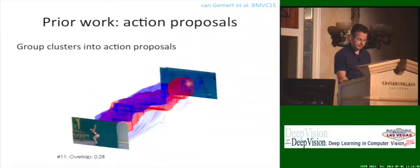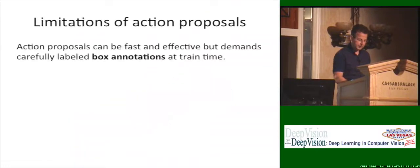Action proposals are great, and they can be super fast and effective. But they have one major limitation. At training time, you need to specify for each action also this bounding volume. So you have to label for individual frames, boxes. This is, of course, very expensive and doesn't scale very well. So I will look into an approach today that can do without these box annotations and still localize.